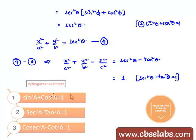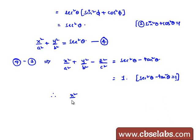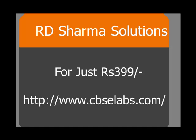Therefore, here we prove that x square by a square plus y square by b square minus z square by c square is equal to 1.